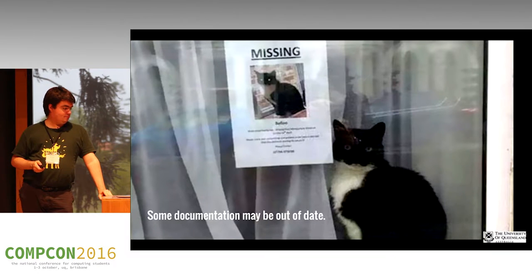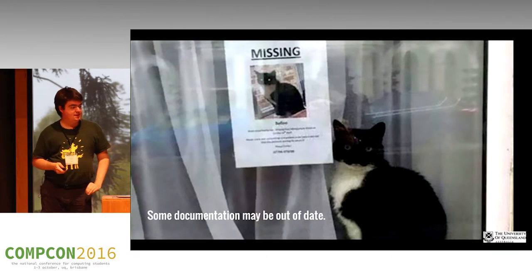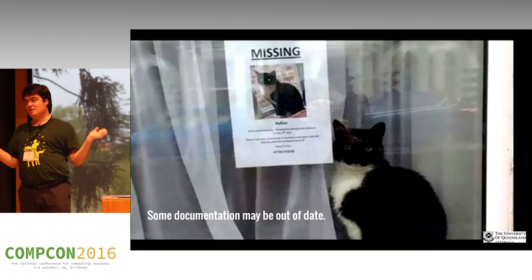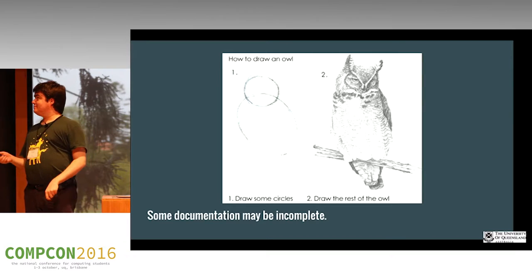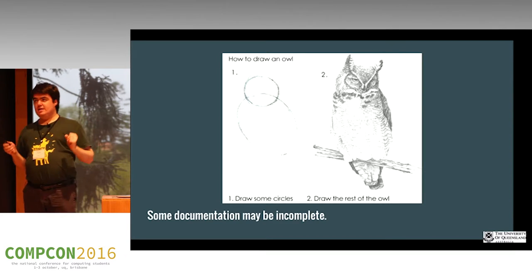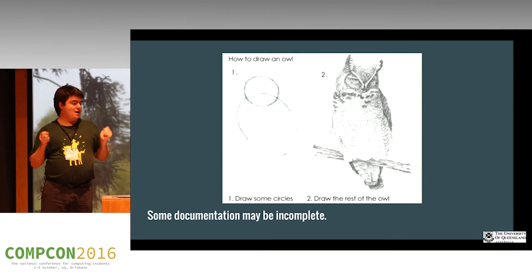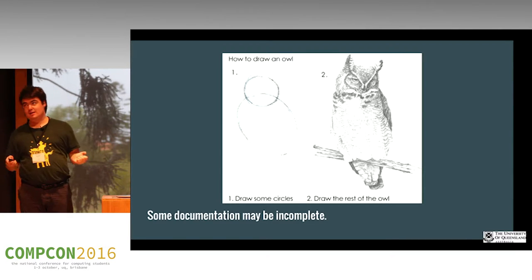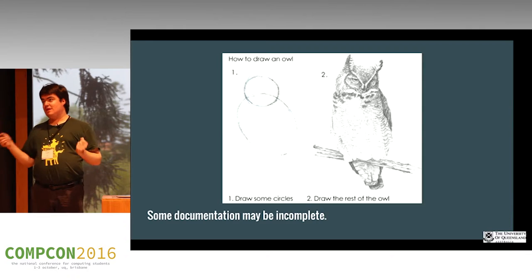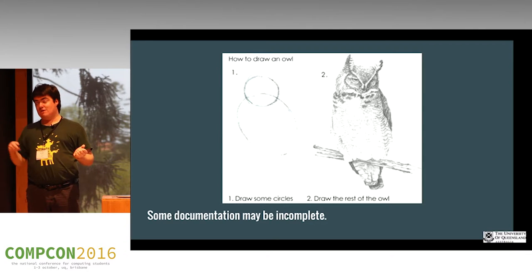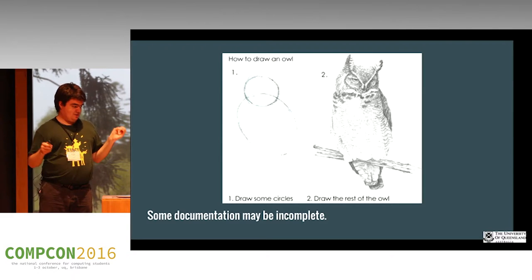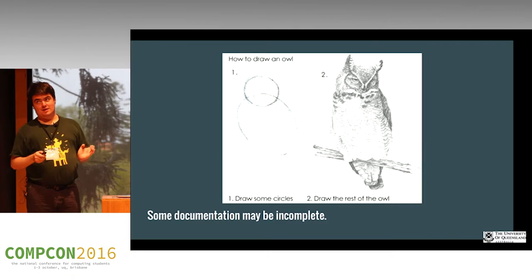Some common problems: documentation may be out of date — that's the tech writer's problem, someone else's problem, we'll deal with it later. Some documentation may be incomplete; the writer doesn't understand how much knowledge they have and they'll just skip over things. When I was writing this talk, I went through about three or four different revisions because I realized I had been looking at this problem for a long time and became one of those annoying domain experts, and I needed to simplify things.